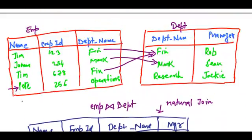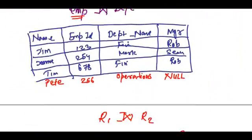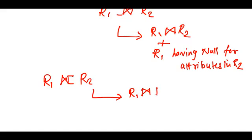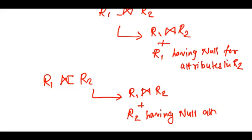Similarly, we have an extra research department — just assume it's a new department and there are no employees working in it. If I take a natural join, I won't get the information regarding this research department. So if I need to have this information, I will take a right outer join, open towards the right. The result is tuples in r1 natural join r2 plus tuples in r2 with null for attributes in r1.